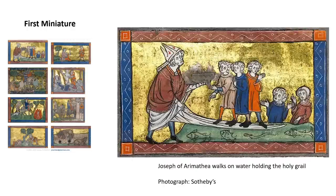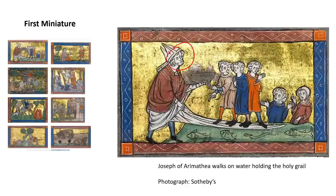This first picture is a Sotheby's photograph available online. Here it's Joseph of Arimathea walking on the water holding the Holy Grail — you can see the Grail in a kind of gray jar with some smoke. You have five children or three children and two teachers on the right-hand side stepping on his robe over the water, which is strange and peculiar. He's got his left foot in the water but they're walking on his robe.